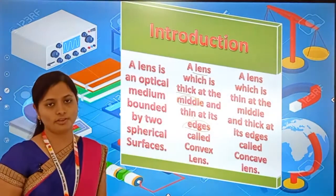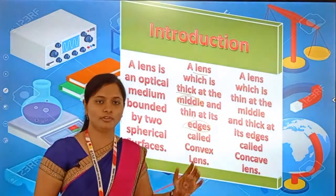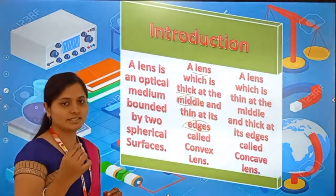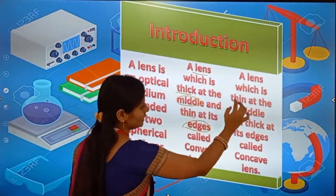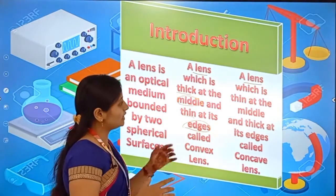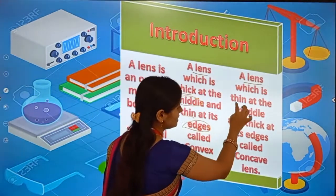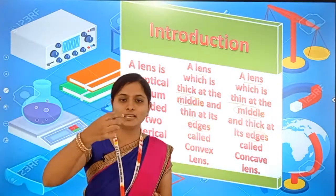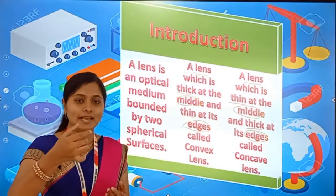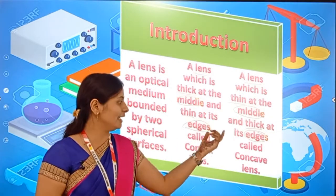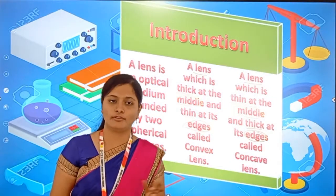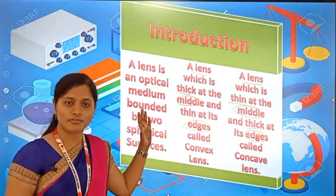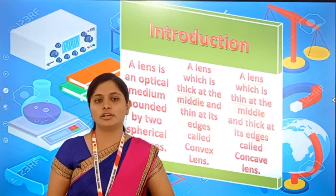Next, concave lens — what is the concave lens? It is the opposite of convex lens. Here we are considering one lens which is thin at the middle but thick at its edges; that is known as a concave lens. So already we got the definition of lens, convex lens, as well as the concave lens.